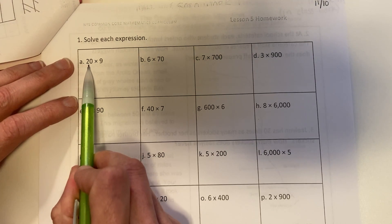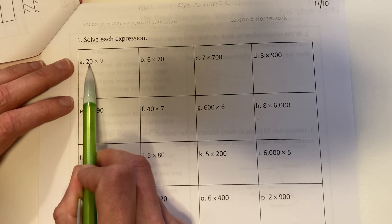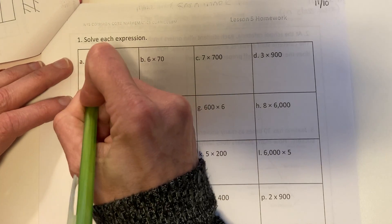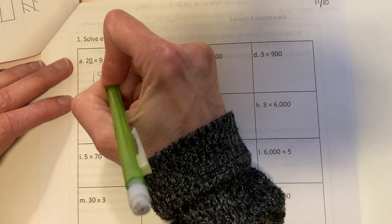First expression is 20 times 9. I'm going to separate 20 into 2 times 10 and do my 2 times 9 first, which is 18, and then add the zero for multiplying it by 10.